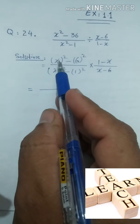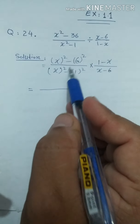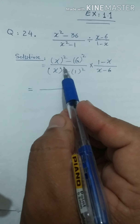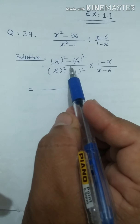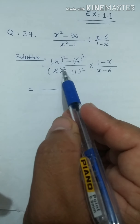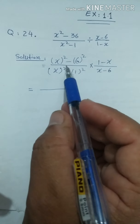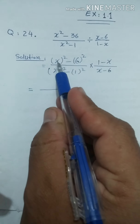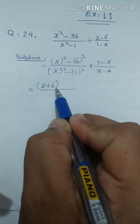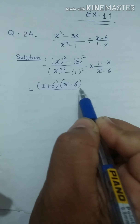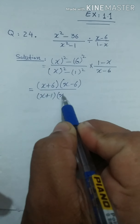अब हमारे पास दोनों चीज़ें formula की form में आ गई हैं — x² minus 6² और x² minus 1². यह a² minus b² का formula है, जो equal होता है (a+b)(a-b)। तो x² minus 6² बन जाएगा (x+6)(x-6) और नीचे बन जाएगा (x+1)(x-1)।